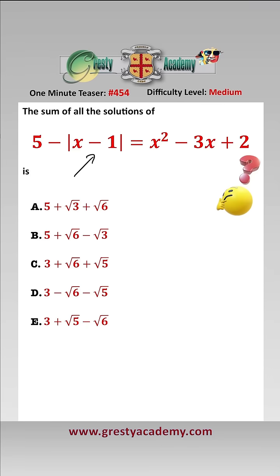Because of this modulus here we have a critical point at x equals 1, so we need to look at two regions.